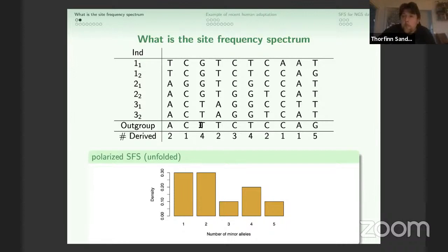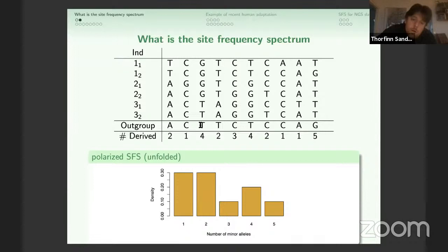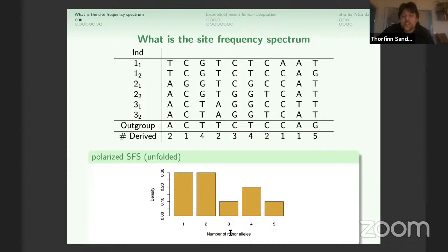There's a question from the audience: the label on the x-axis here is incorrect. Yes, that is correct — it should be the number of derived alleles. Thank you, I'll make sure to update this.